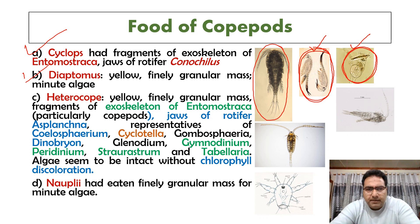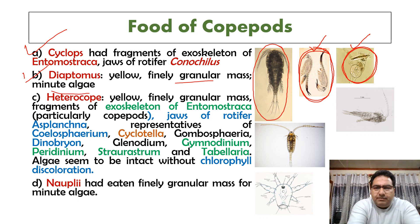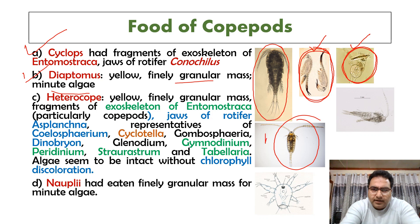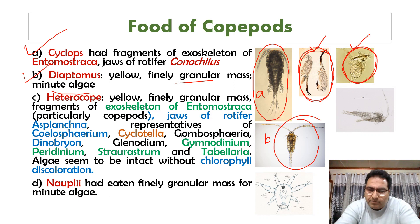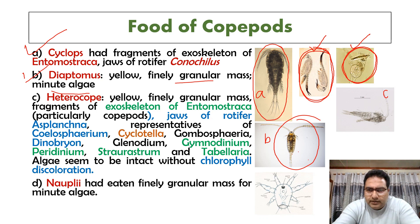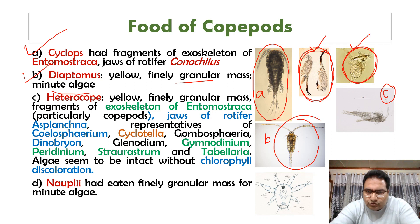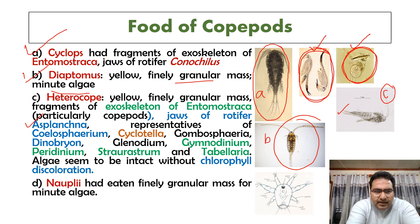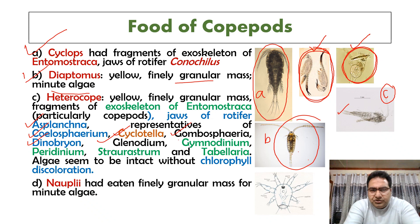In the case of Dioptomas, the gut contained yellow finely glandular mass and minute algae. In the case of Heteroscope, another copepod, the gut contained yellow finely glandular mass, fragments of exoskeleton of Entomostraca, and sand. Copepods also consumed various algae and rotifers such as Asplanchna, Coelosphaerium, Cyclotella, Gomphosphaeria, Dinobryon, Gloeodinium, Gymnodinium, Peridinium, Staurastrum, and Tabellaria, with algae found in the gut but without chlorophyll discoloration.